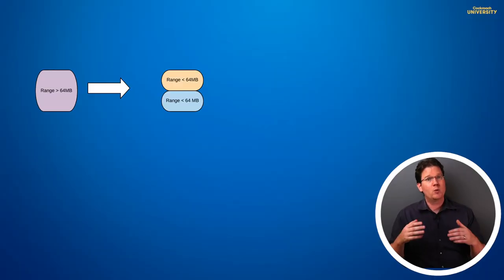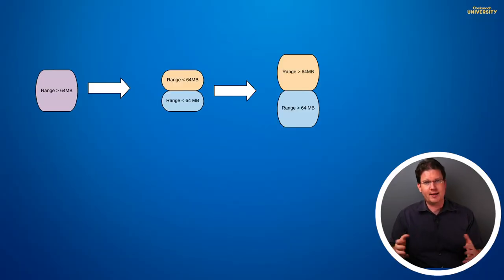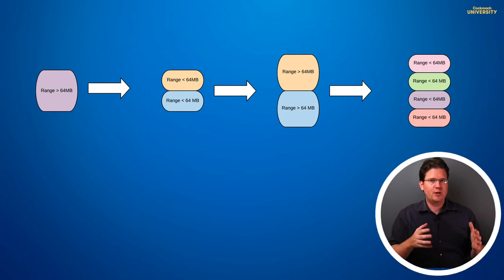The reason why it's a useful abstraction is because the cluster divides the key space into what we call ranges. When a range grows beyond a certain limit, 64 megabytes by default, it gets split into two. When those grow, each gets split again, and so on. Splits can also occur for other reasons, but ranges are important because they are the units that CockroachDB replicates and distributes to the nodes of the cluster.